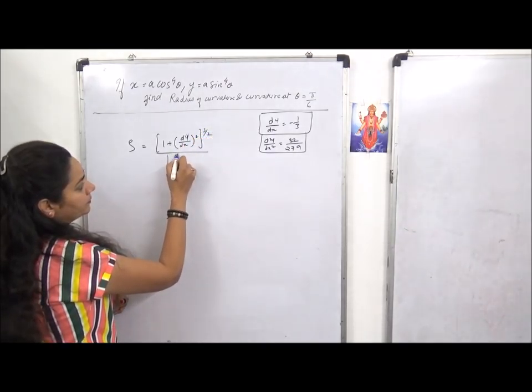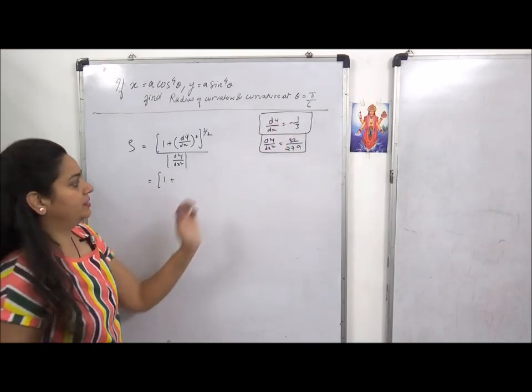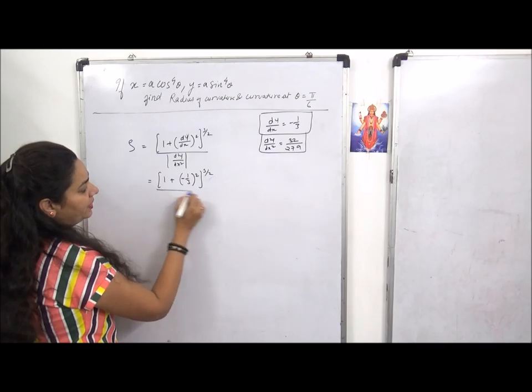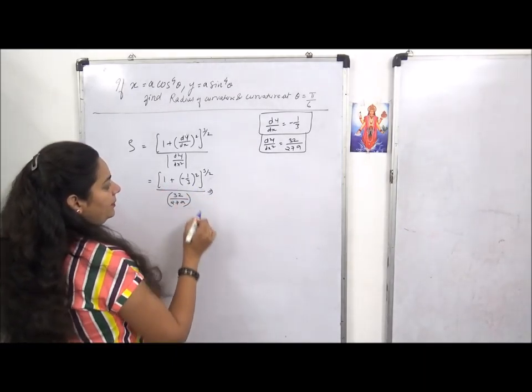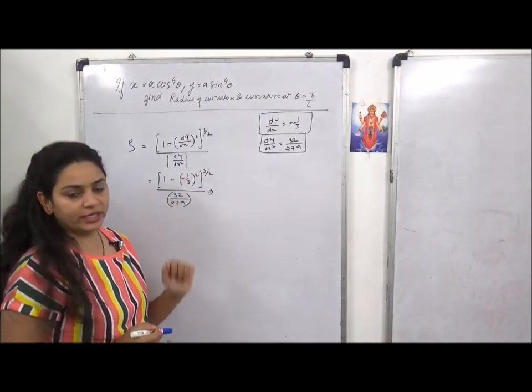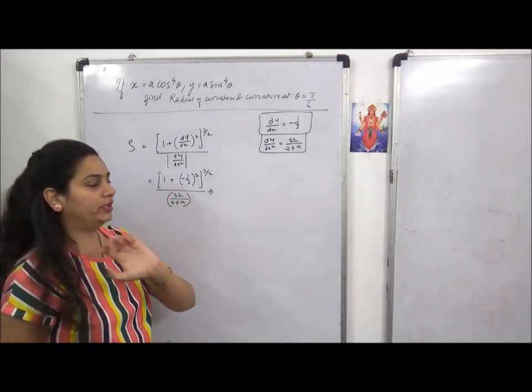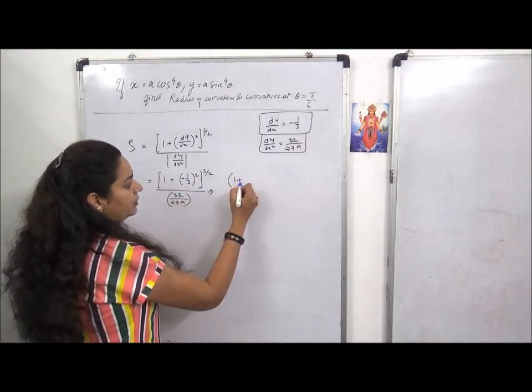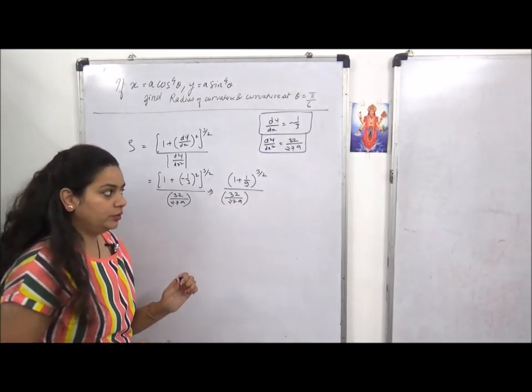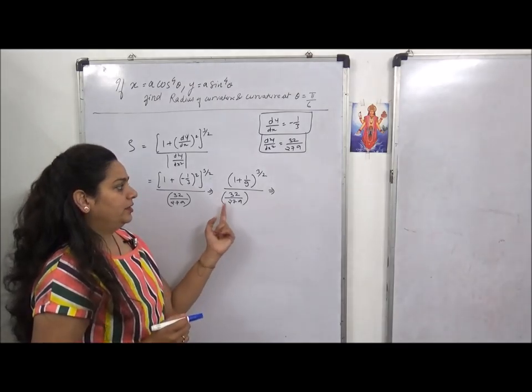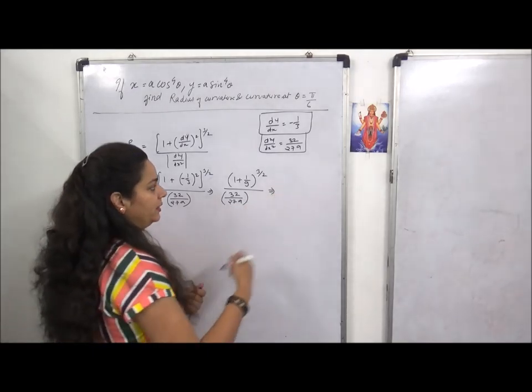Now we come to radius of curvature, that is rho. Rho is given by the formula I mentioned at the start. Then 1 plus dy by dx is minus 1 by 3, so minus 1 by 3 squared raised to power 3 by 2, upon d square y by dx square which is 32 upon 27a. Now if I simplify, 1 plus 1 by 3 squared - minus squared becomes plus.